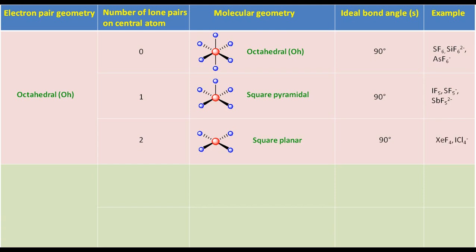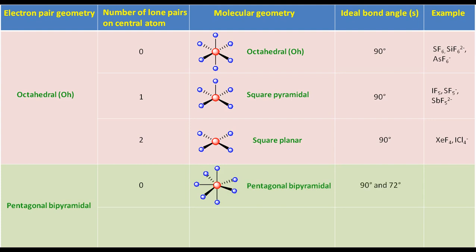XeF4 and ICl4- are examples of square planar molecules. For a molecule with pentagonal bipyramidal electron pair geometry having zero lone pairs on the central atom, the molecular geometry will also be pentagonal bipyramidal. The ideal bond angles are 90 and 72 degrees. IF7 and ZrF7 3- are examples of this type of molecule.